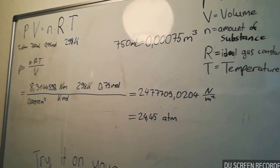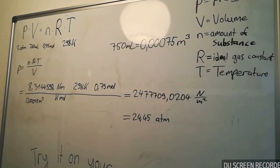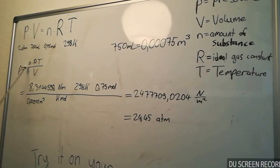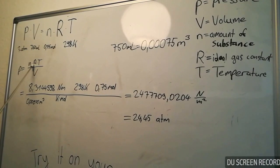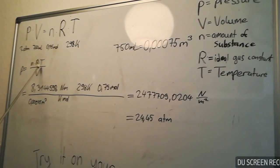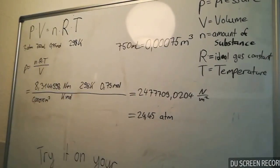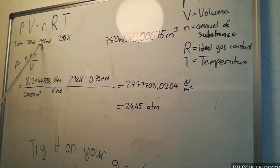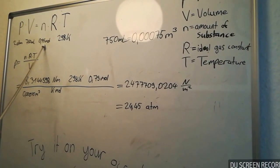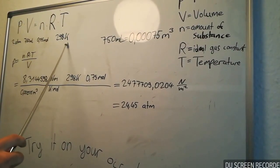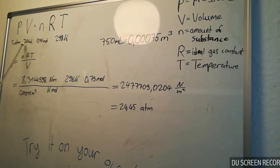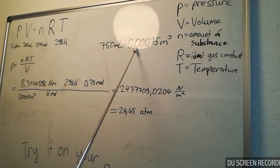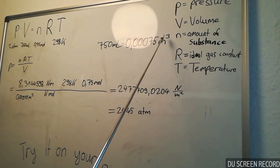Our last example is the pressure. If you form the ideal gas law for pressure: pressure is equal to the amount of substance multiplied with the ideal gas constant and the temperature divided by the volume. Our values are 750 milliliter, 0.75 mol, and 298 kelvin. So, our 750 milliliter equals 0.00075 cubic meter.